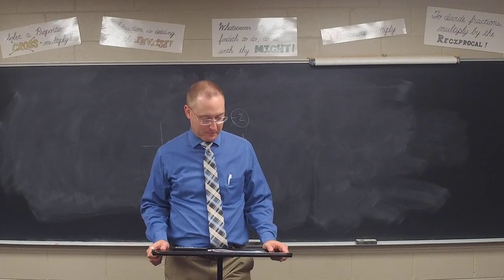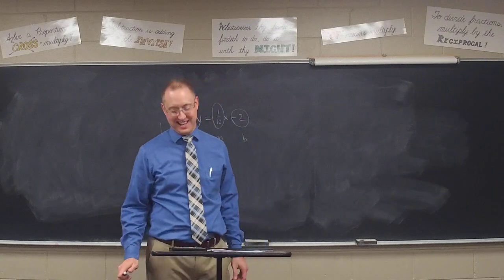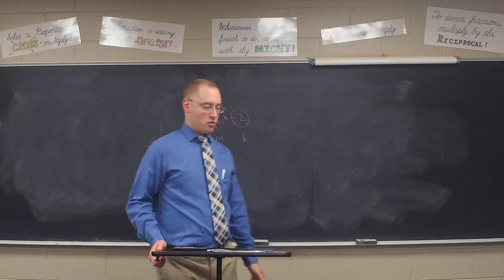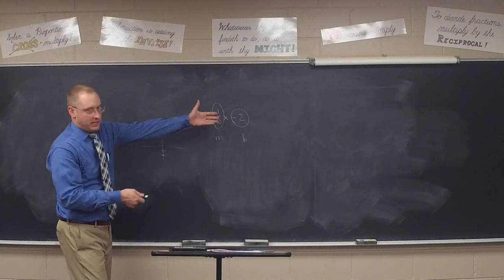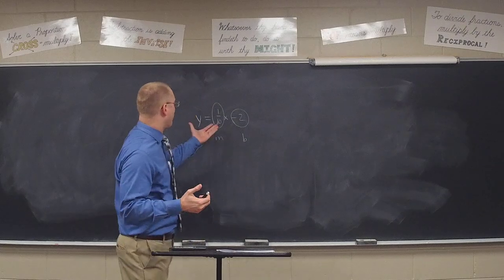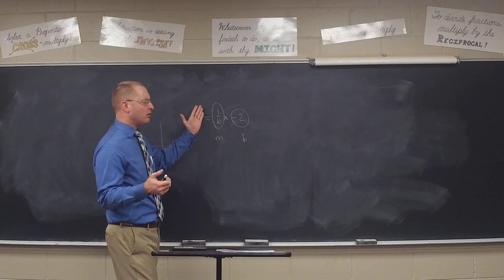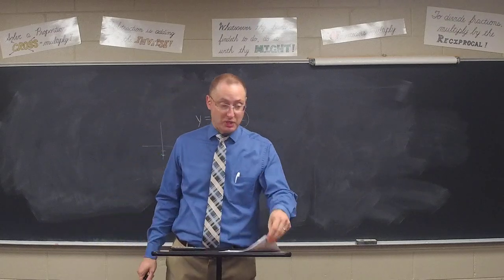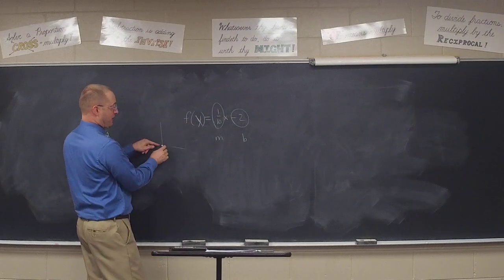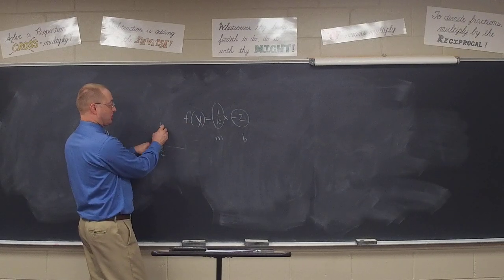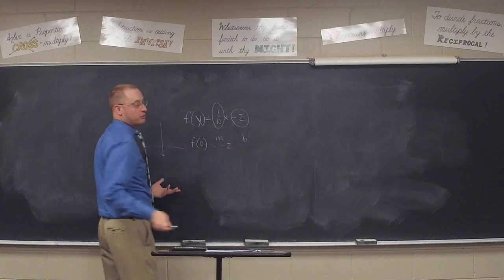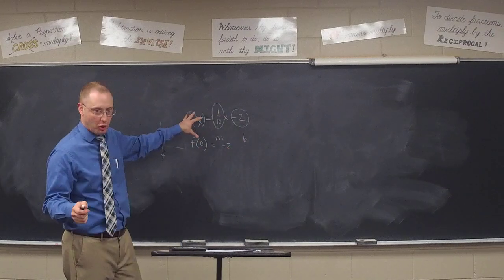The one-tenth is the slope — rise one, run ten. In function notation, the y-intercept is when x is zero, so you could say the y-intercept is f of zero: one-tenth times zero is zero, minus two is negative two. Either way, I just wanted you to see it was slope-intercept form.